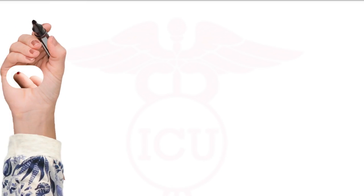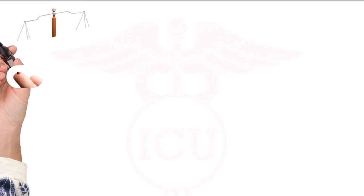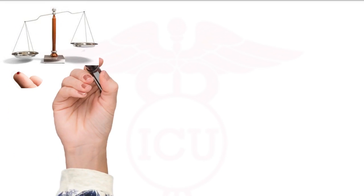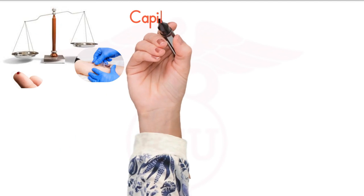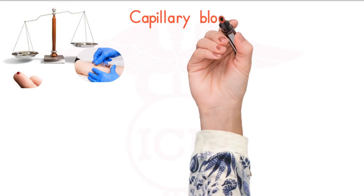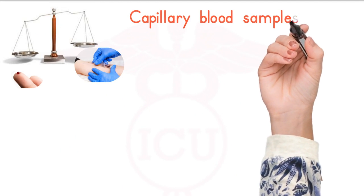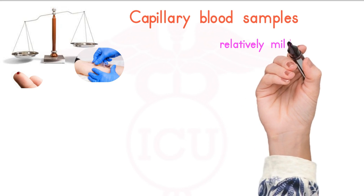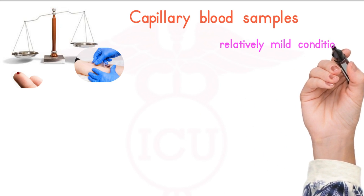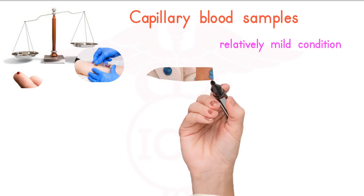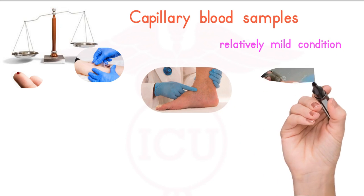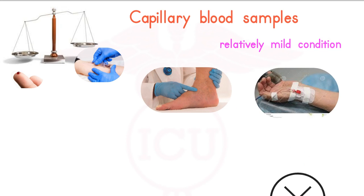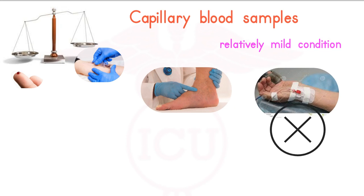Capillary blood samples can lead to significant errors in glucose measurement compared with venous and arterial blood samples. Capillary blood samples (needle prick) are indicated for critically ill patients with a relatively mild condition, no edema of the extremities, and no invasive arterial blood pressure monitoring.